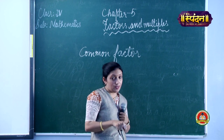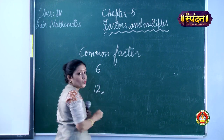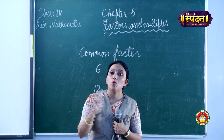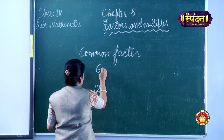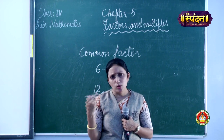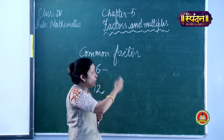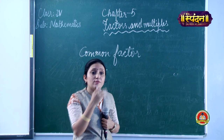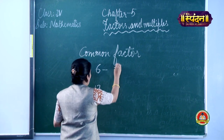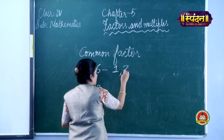Let me take two numbers: 6 and 12. First we find their factors. For 6: 1 is a factor, 2 is a factor (2×3=6), 3 is a factor, 4 is not, 5 is not, and 6 is a factor. So the factors of 6 are 1, 2, 3, and 6.